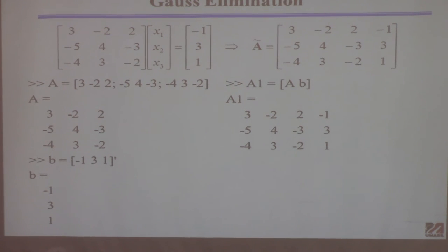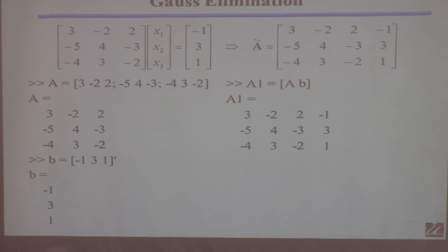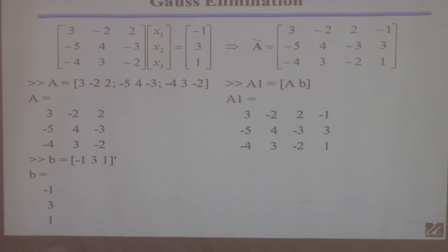We take the original problem Ax = b, perform row operations, and end up with a new problem Rx = f, where R is the reduced row echelon (triangular) form. We've changed the A matrix to R and the b vector to f — the equations are equivalent but easier to solve from the triangular structure.